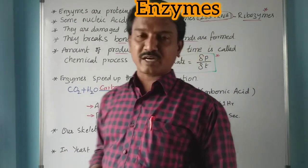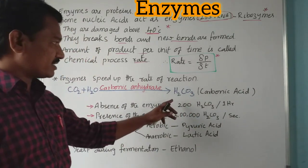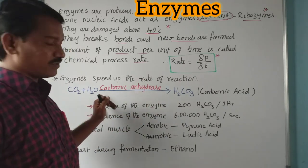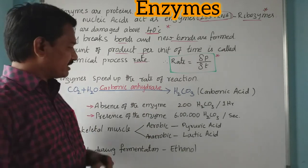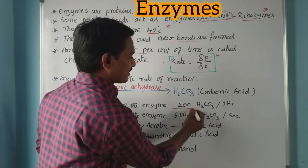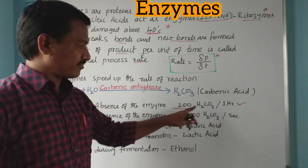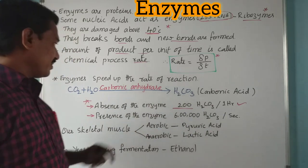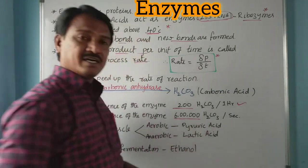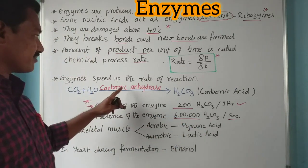For example, CO₂ plus H₂O combines to form carbonic acid (H₂CO₃). In the absence of the enzyme carbonic anhydrase, it takes one hour to form 200 molecules of carbonic acid. But in the presence of carbonic anhydrase, six lakh H₂CO₃ molecules are formed per second.